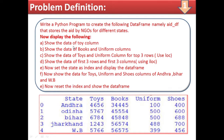Display the following: show the data for the twice column; show the data of books and uniform columns; show the data of twice and uniform columns for the top three rows using loc; show the data of first three rows and three columns using iloc; then set the state as index and display the DataFrame.